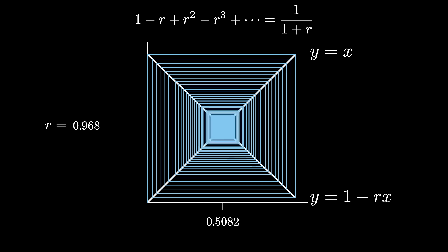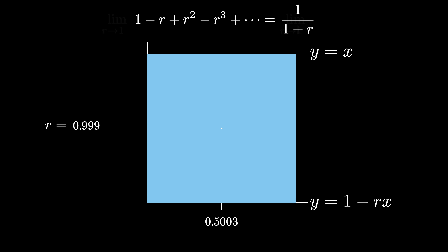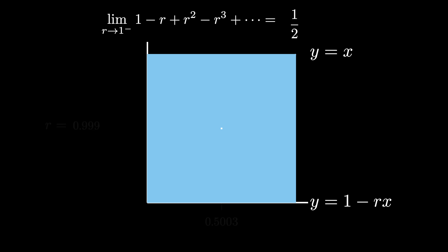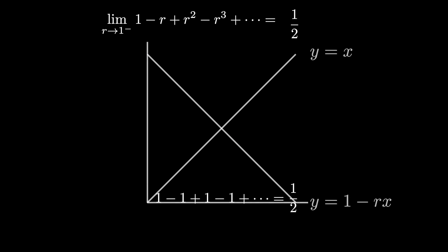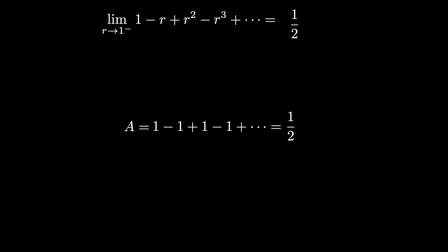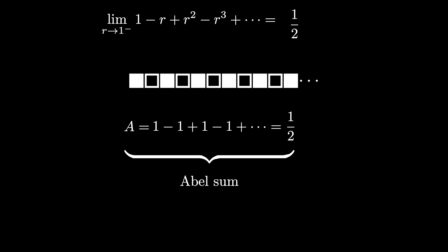Therefore, let's imagine taking r as close to 1 as possible without being 1 — that is, taking the limit as r approaches 1 from below. We see that the infinite sum approaches 0.5, or 1 half. The limit as r approaches 1 from below of 1 minus r plus r squared minus r cubed and so on equals the limit of 1 over 1 plus r, which we compute by plugging in 1 to get 1 half. This is essentially the Abel summation for the infinite sum A, meaning this infinite alternating line of squares can be assigned the value 1 half.